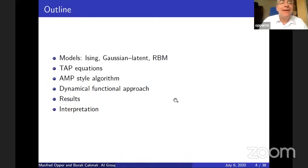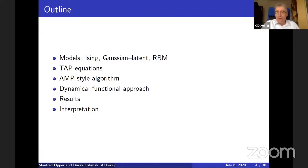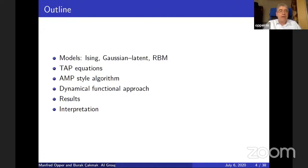The outline of the talk: I'll introduce some of the models — essentially simple Ising models, Gaussian latent models, which are very much related to generalized linear models, and also restricted Boltzmann machines. Then I'll talk about TAP equations briefly, which are the mean field equations for inference, then introduce an AMP-style algorithm and discuss how that can be studied using the dynamical functional approach. I'll show some results and try to give some interpretation.